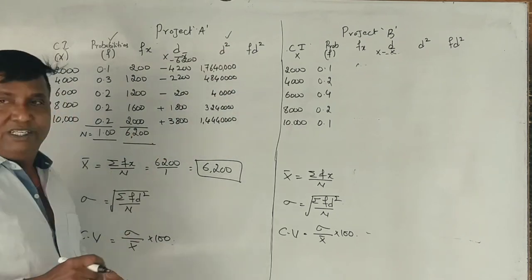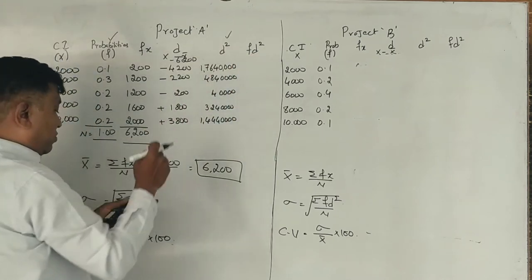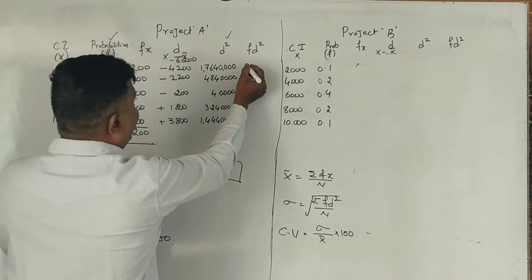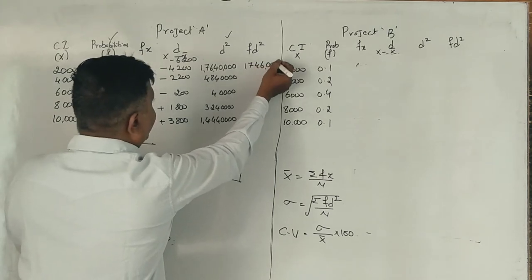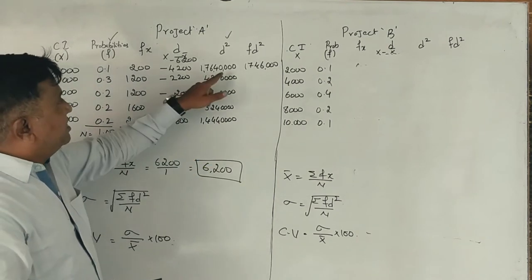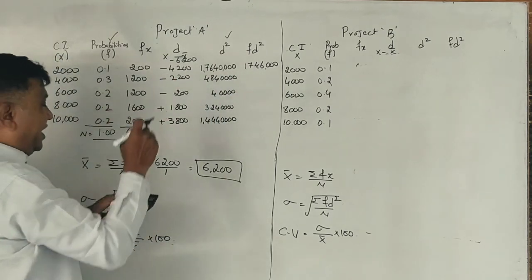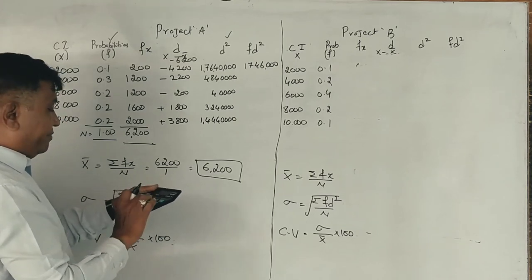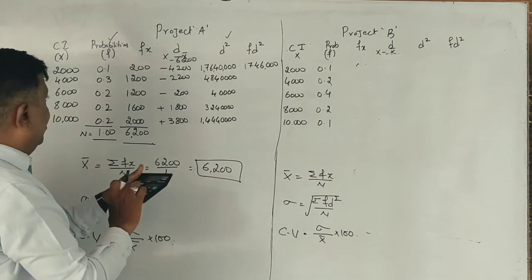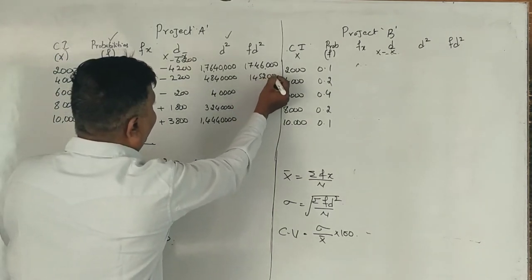F into D square: 1,764,000 into 0.1 equals 176,400. Next, 0.3 into 484,000 equals 145,200. Correct, 145,200.